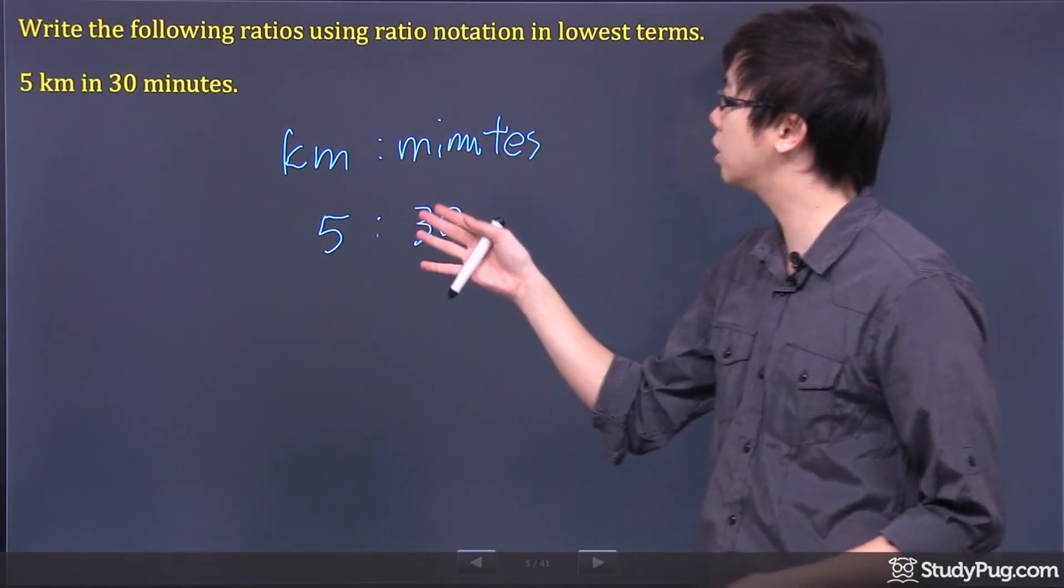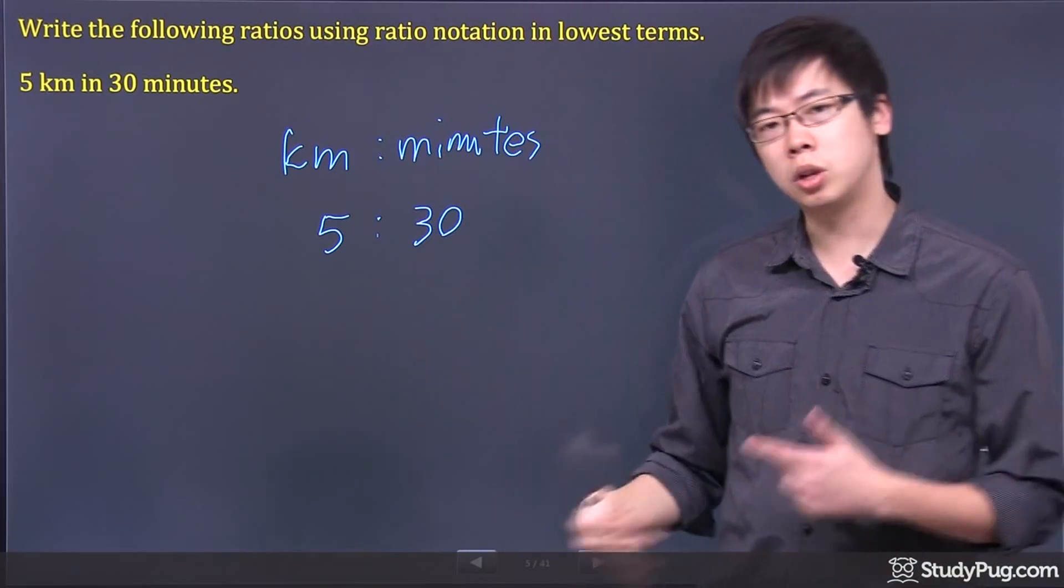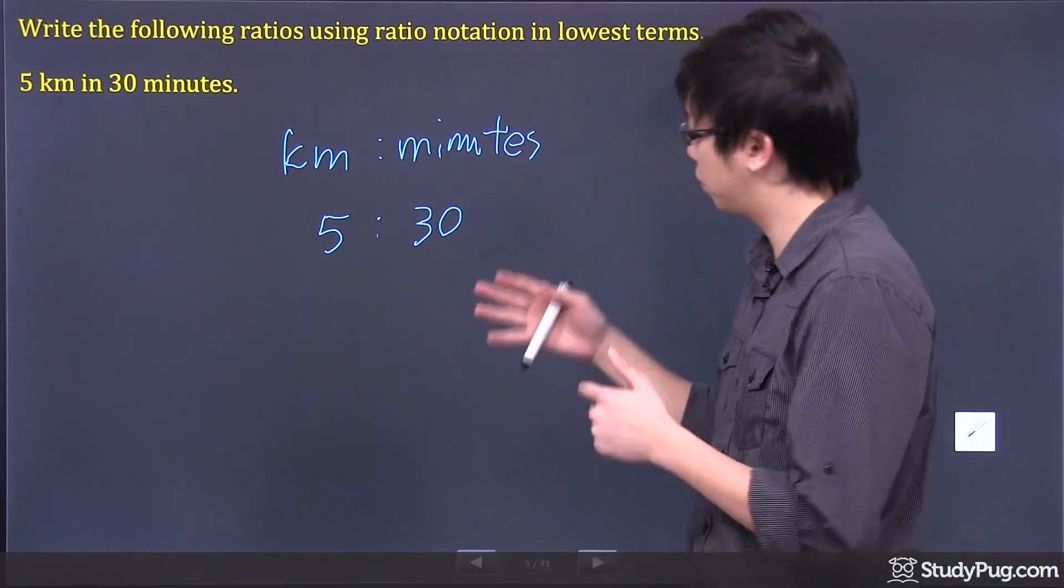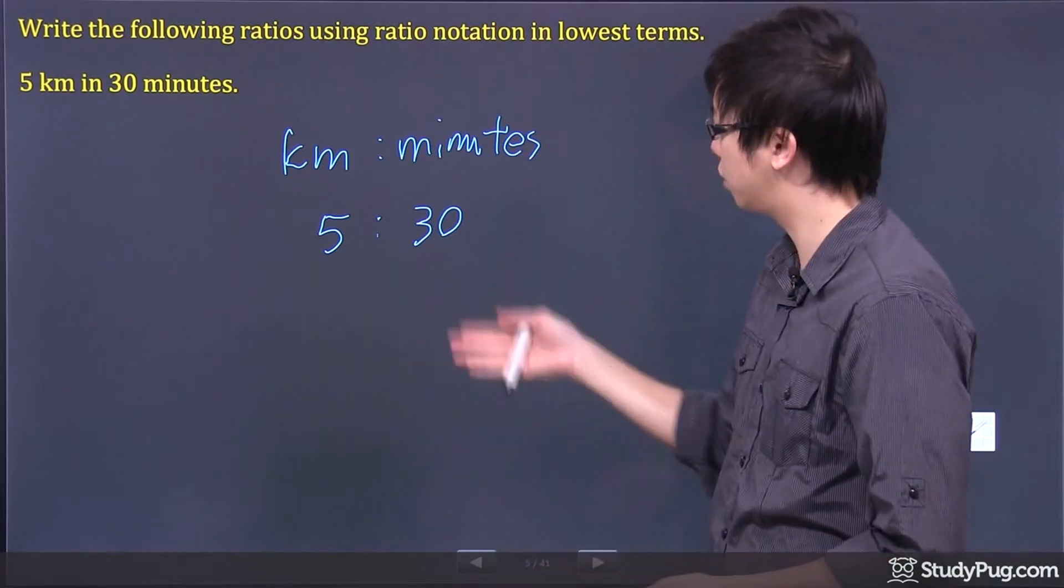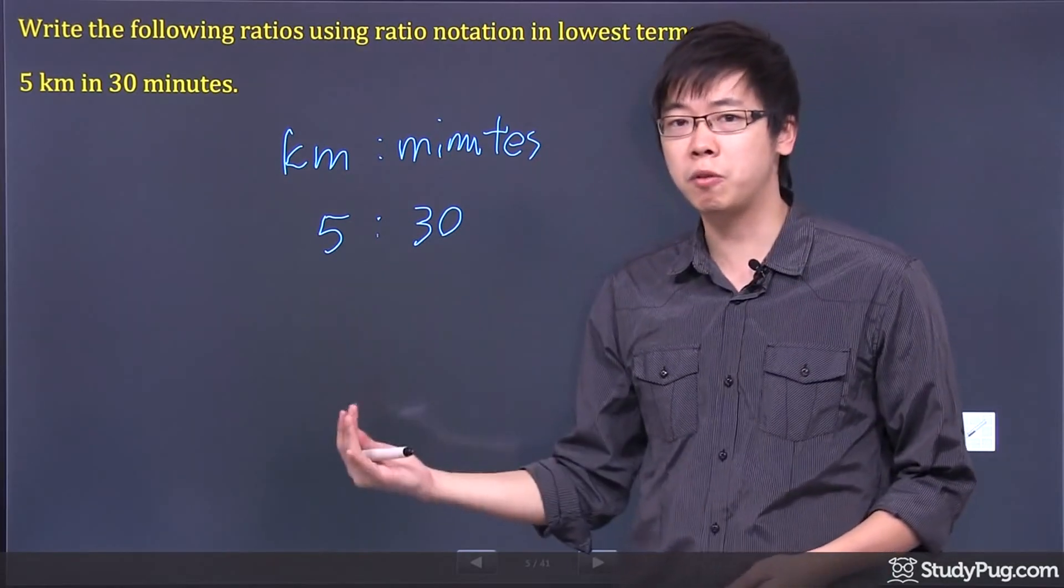What you need to do is rewrite this in lowest terms. For the lowest term, you just have to figure out the common factor for these two numbers. So the five and 30, you can divide both by five.